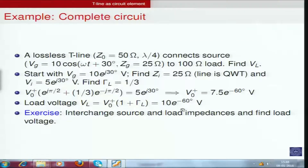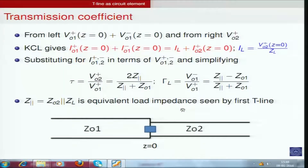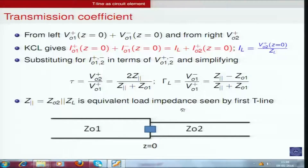As an exercise, interchange the source and load impedances and find the new load voltage. We now consider a more common situation where one transmission line is terminated by another. Often multiple lines of different lengths and characteristic impedances are cascaded for matching purposes. The question is how much voltage gets reflected from the first line and how much gets transmitted into the second.